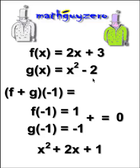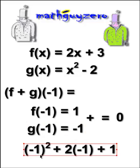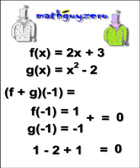But double check. Plug those into your new function that you just found, and you should get the same answer. So (-1)² is 1 minus 2 plus 1. So 1 + 1 - 2 is zero. So what do you know, it works.